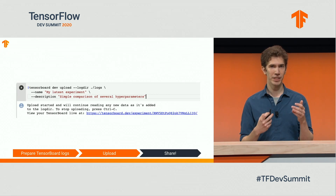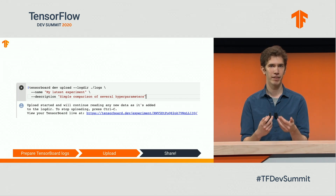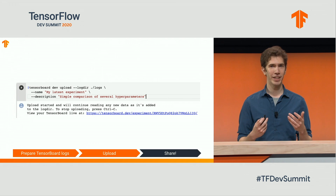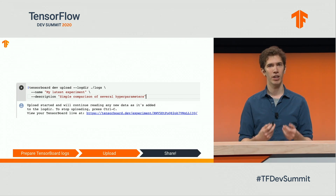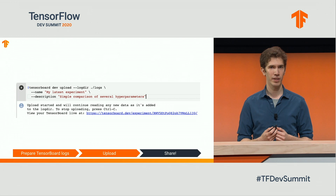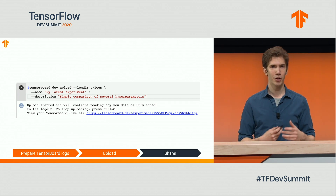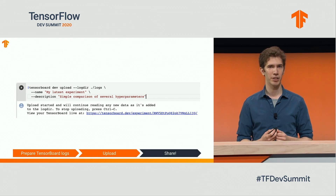You can upload these logs with the TensorBoard dev upload command and provide the log directory. Just last week, we enabled optionally adding a name and description to your experiments to provide more context to those that view it. This can include links to your paper, GitHub repo, or simply point out what is really interesting about your results.